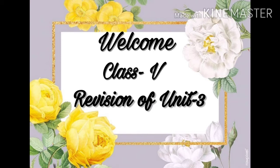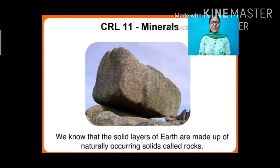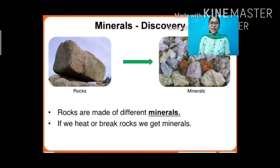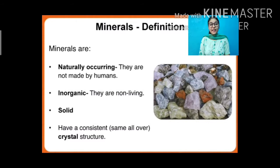I hope all of you are ready, so let us begin our class. Let us first revise about minerals. We know that the solid layer of earth is made up of naturally occurring solids and they are called rocks. Rocks are made up of different minerals — if we heat and break rocks, we get minerals. Some minerals are naturally occurring, they are not made by humans, and some minerals are inorganic, meaning they are non-living and not made of or coming from living things.